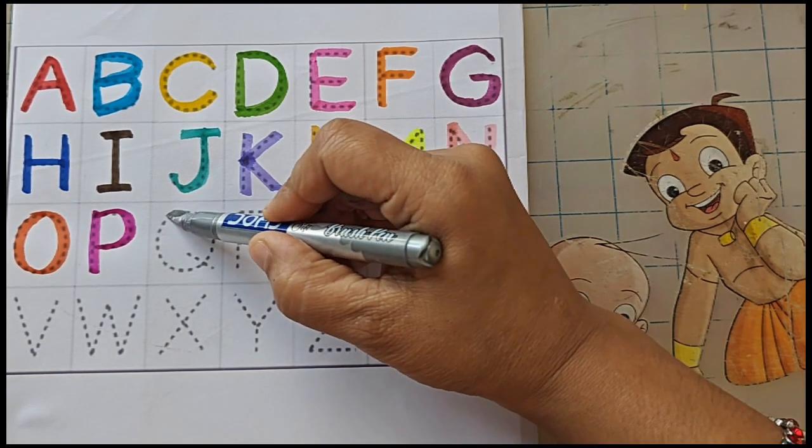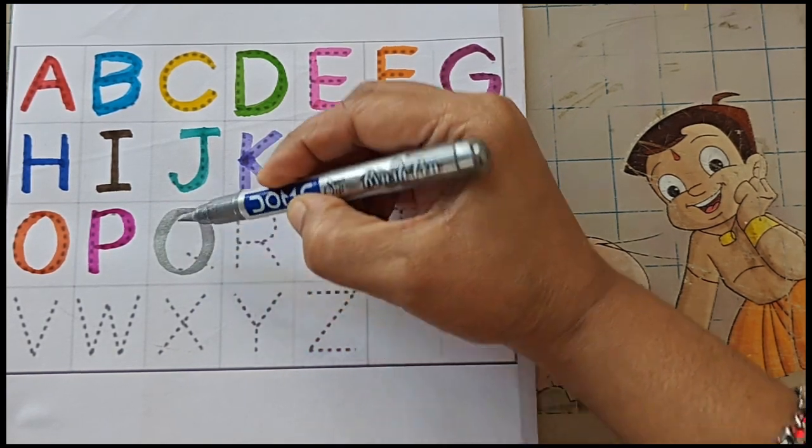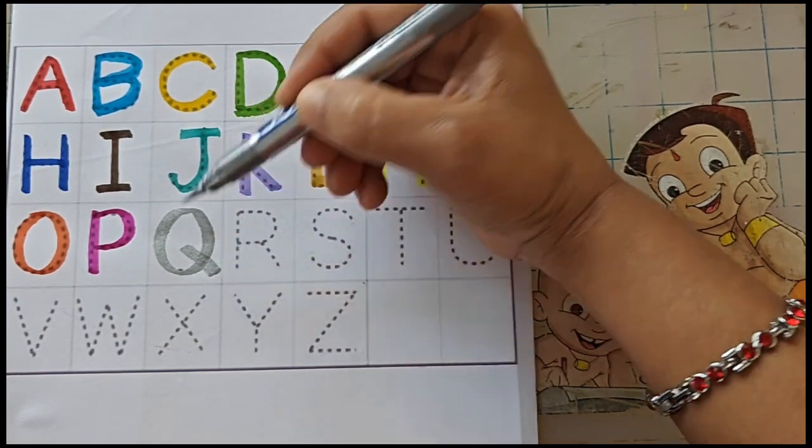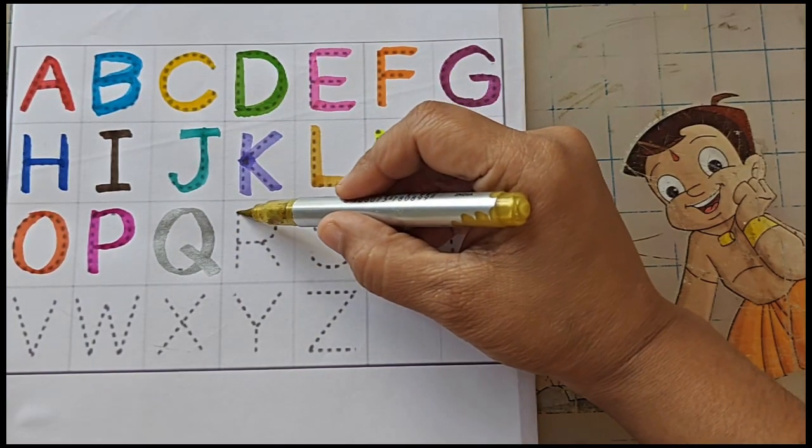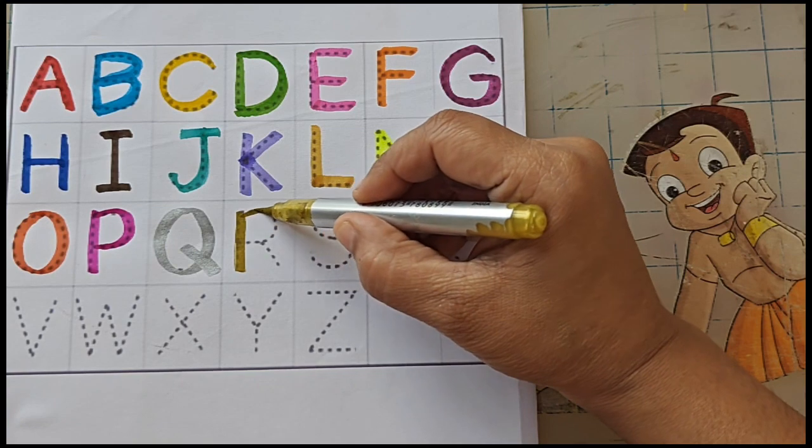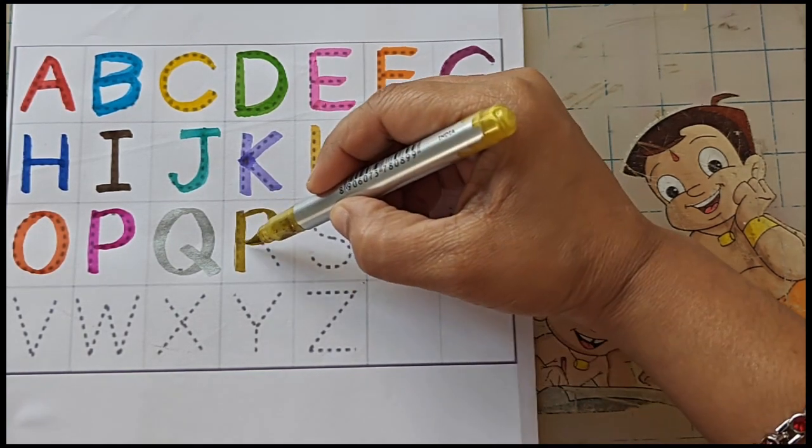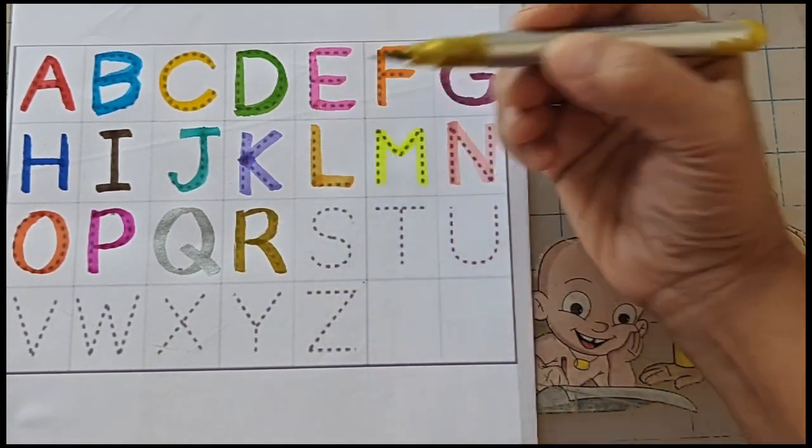Q, Q for queen. Q, Q for quilt. R, R for red. R, R for rose.